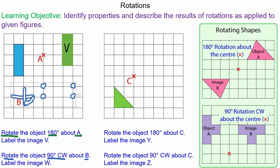And we will redraw the object to create the image which we'll label W.